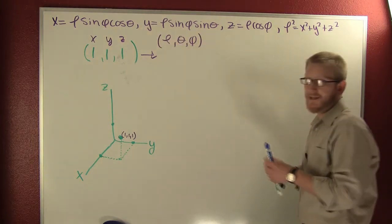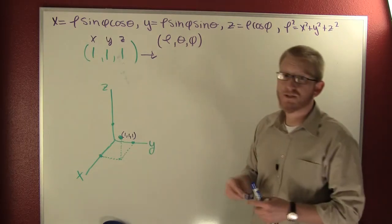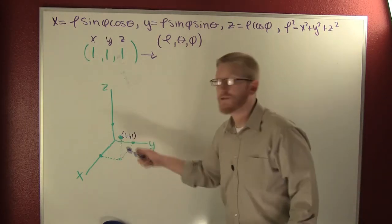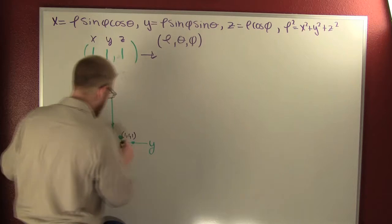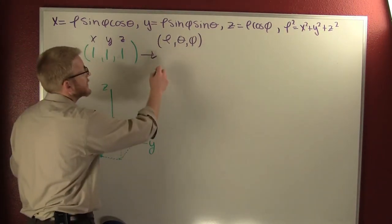So let's go ahead and get rho. We can get rho using the distance formula. Rho is the distance from the origin to the point. That's that distance. Let's find rho now.